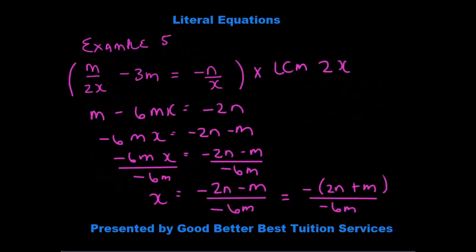Let me do one more example with you. Let's look at example 5. We have m over 2x minus 3m is equal to minus n over x. Now, the simplest way for us to solve this is to multiply out by our LCM, which is 2x.